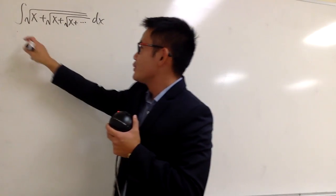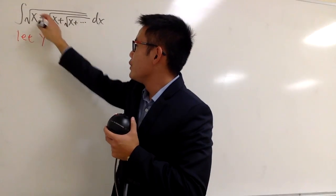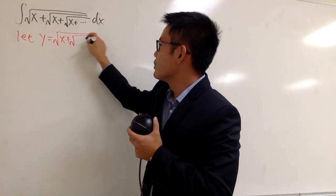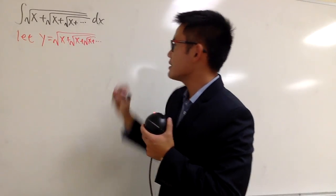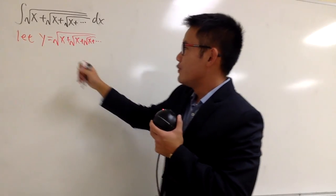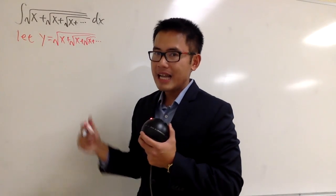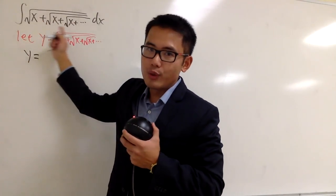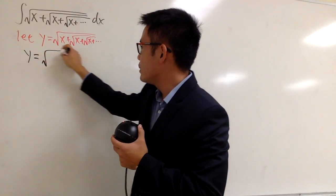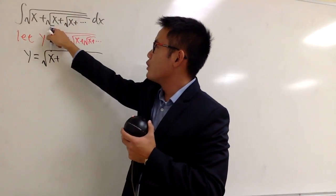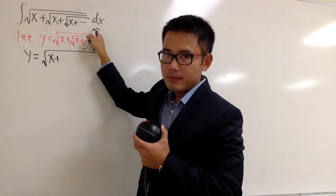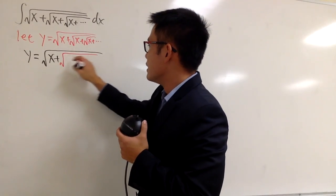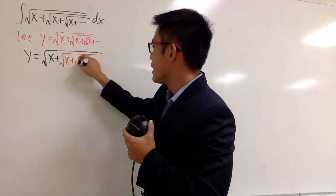Let me do a quick review. I will begin by saying that y is equal to the infinitely nested expression: square root of x plus square root of x plus square root of x plus dot dot dot. We pretty much have y equal to this. Once again, it's the square root of x plus square root of x plus square root of x and so on. For this part right here, let me write it down in red — square root of x plus square root of x plus dot dot dot.